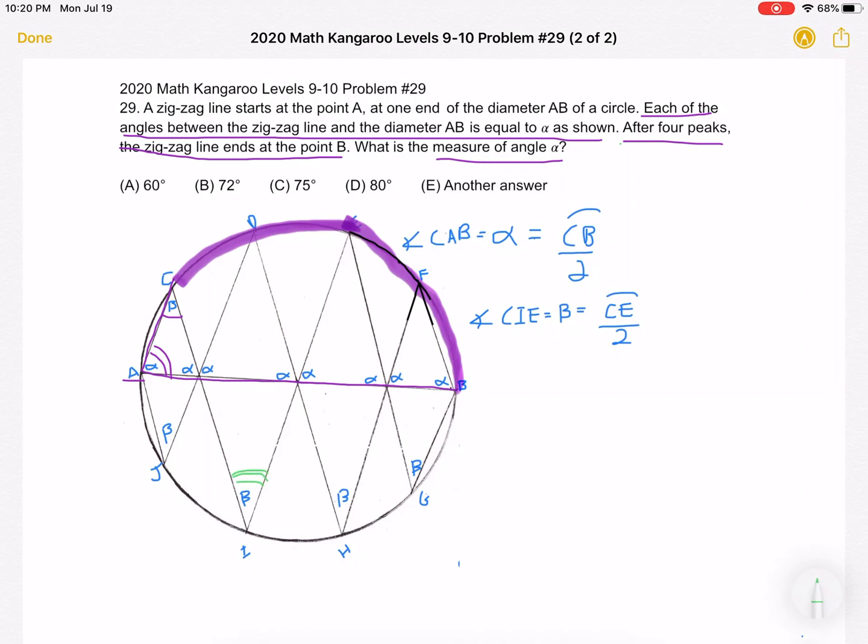So again, it's an inscribed angle. I is the vertex on the circle, and then the sides, IC and IE, both intersect the circle as well. And because it's an inscribed angle, we know that its measurement, we have already established, is equal to beta. And that must be equal to arc CIE divided by 2, because that's the arc that it opens up to.